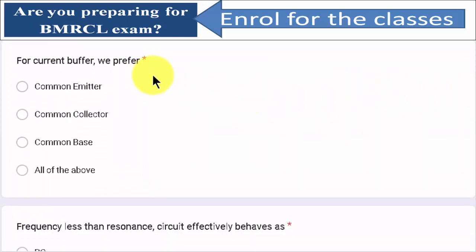For a current buffer, we are going to prefer common base configuration. Input impedance is low, output impedance is high. Next question.